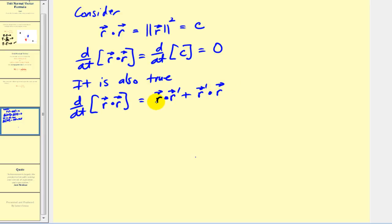Now even though the order of these dot products are different, the results would be the same. So this is equal to two times r dotted with r prime. But from above we know that this derivative has to be equal to zero. So if we divide both sides by two, we could conclude that r dotted with r prime must equal zero. So now we've just shown that any vector valued function dotted with the derivative of itself will always equal zero, and therefore r and r prime are going to be orthogonal.